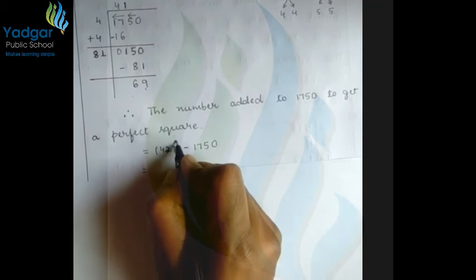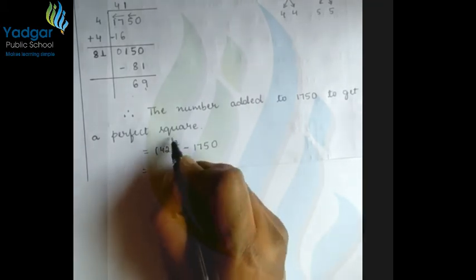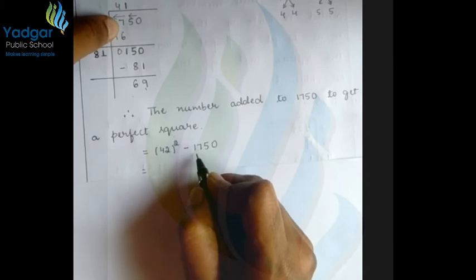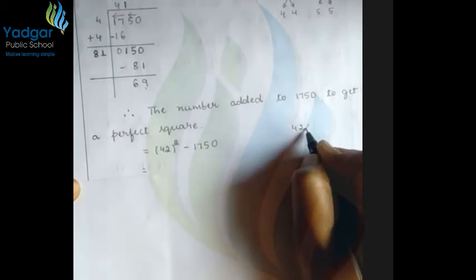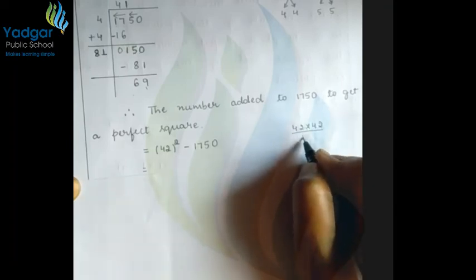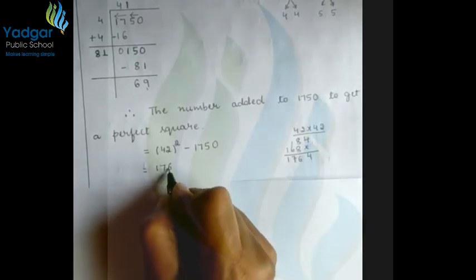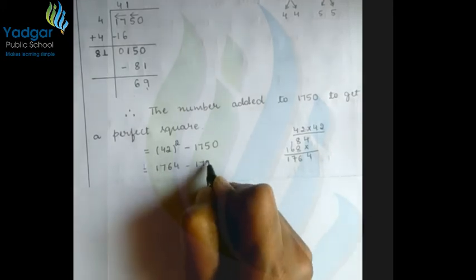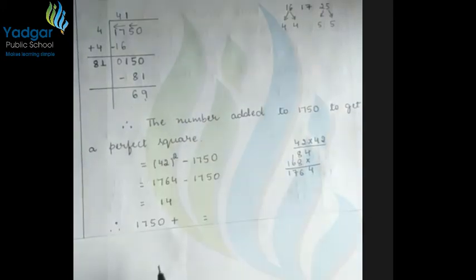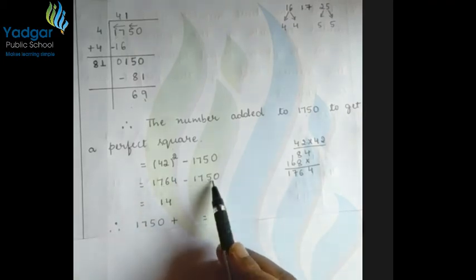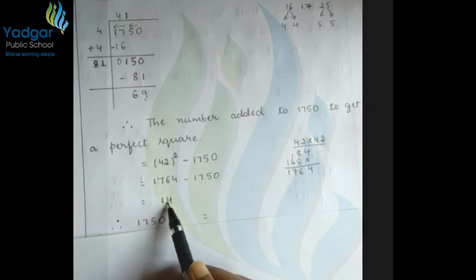The number added to 1750 to get a perfect square: compute 42²=42×42. 2×2=4, 2×4=8, 4×2=8, 4×4=16. So 42²=1764. Then 1764 minus 1750 = 14. So 14 is the smallest number to be added to 1750.